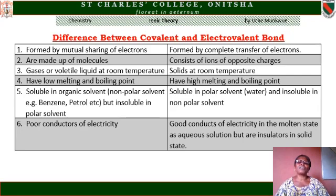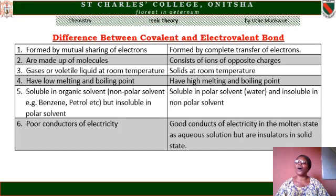Covalent compounds are soluble in organic solvents but insoluble in polar solvents. Electrovalent compounds are soluble in polar solvents like water and insoluble in non-polar solvents. Covalent compounds are poor conductors of electricity. Electrovalent compounds are good conductors of electricity in molten state or in aqueous solution, but are insulators in solid state — meaning these compounds can only conduct electricity when they are in solution.